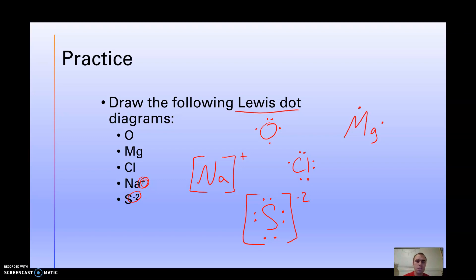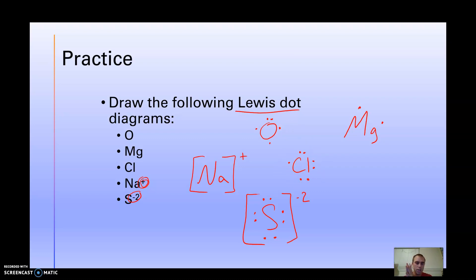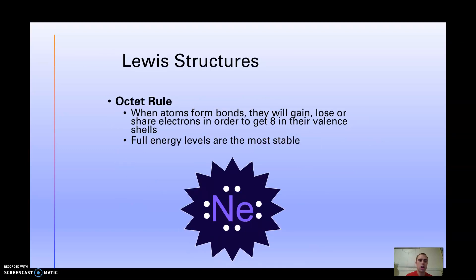Okay, video number two. We just talked about dot diagrams for individual atoms. What's more important is the dot diagrams for molecules — when we have atoms bonded together, whether it's covalent or ionic, we need to know what happens to these electrons that we've documented in our dot structures when we bond together.